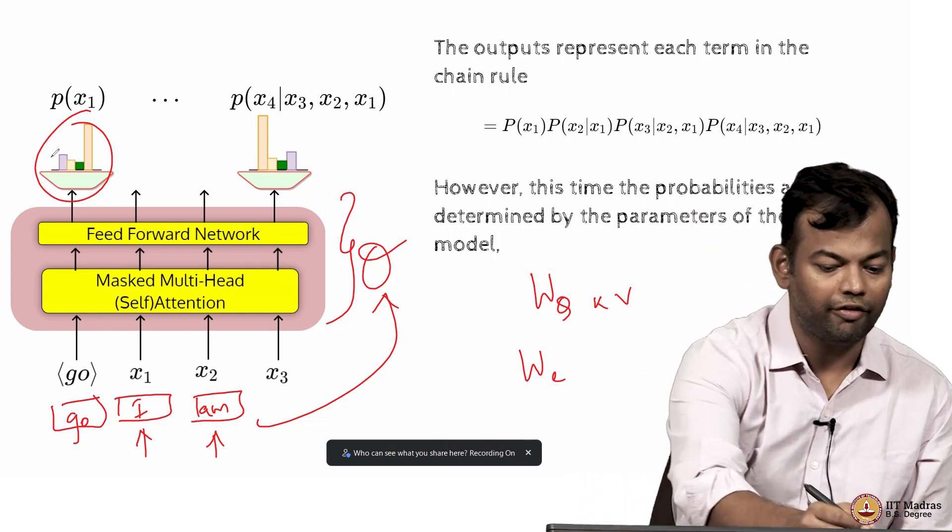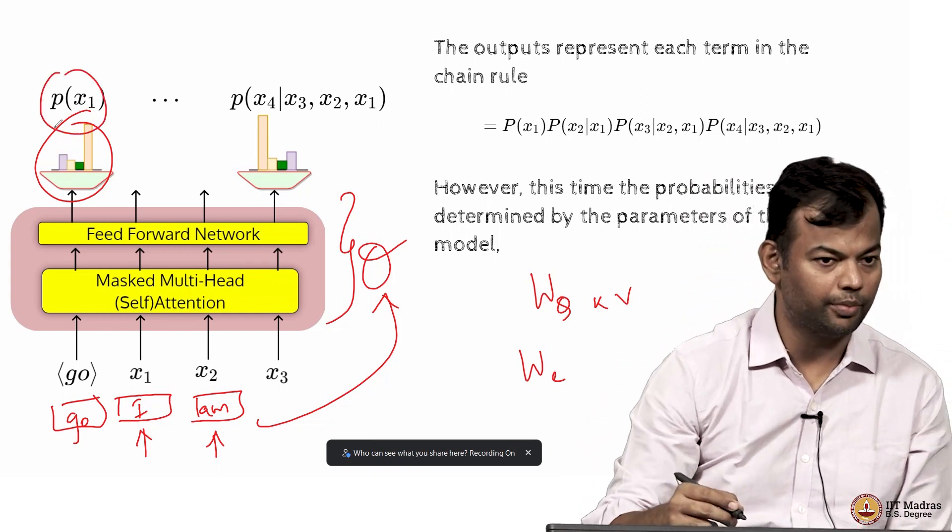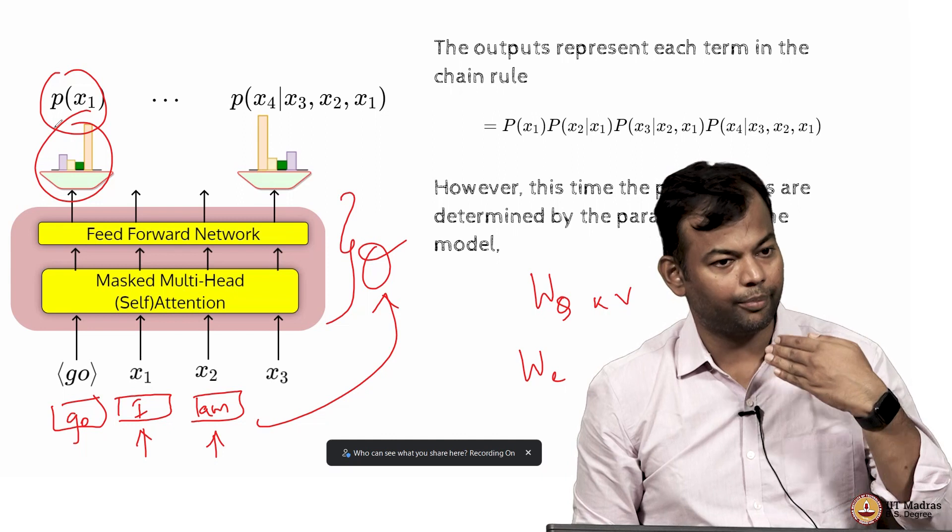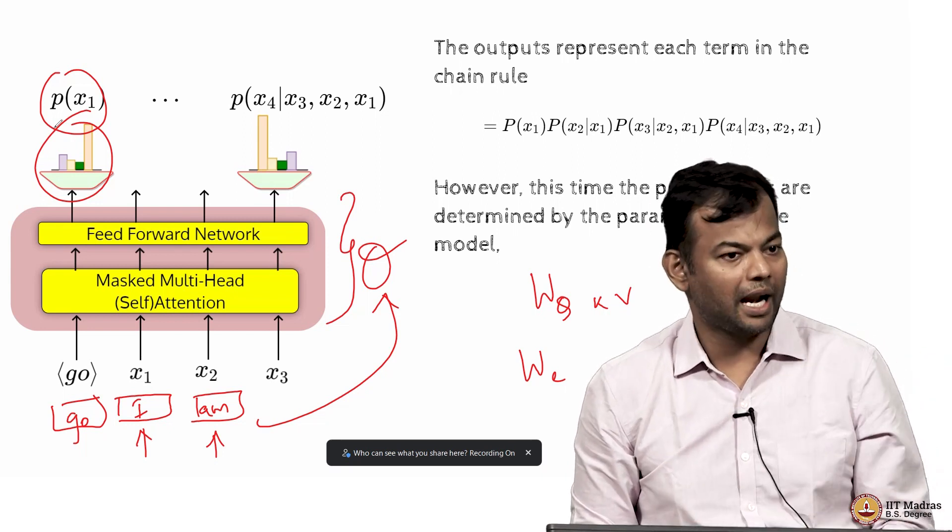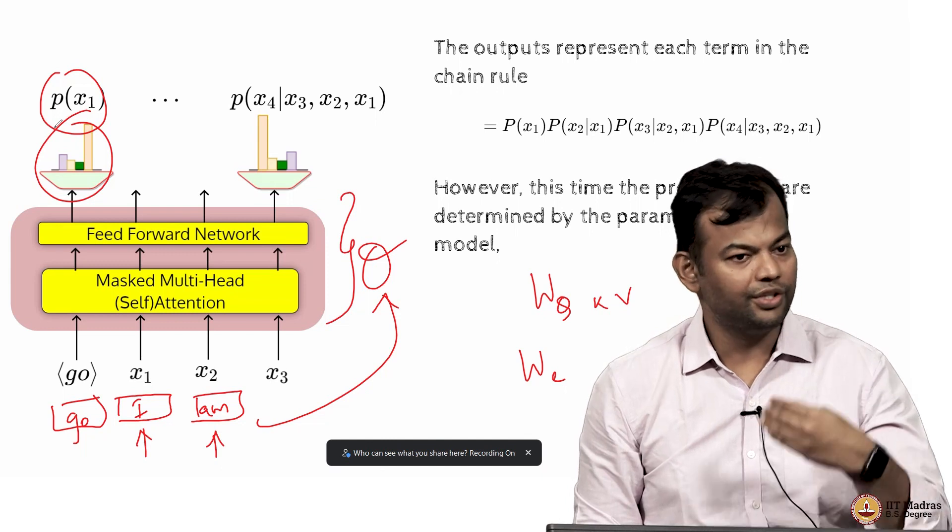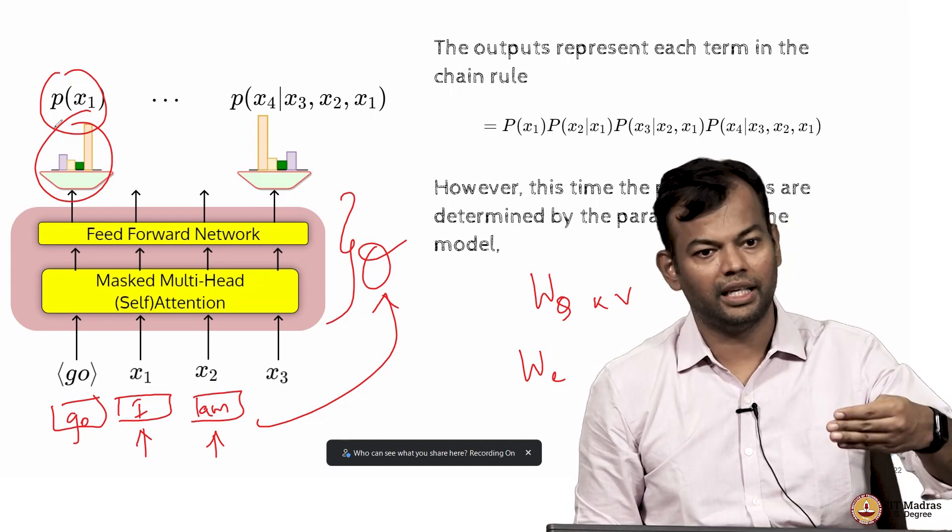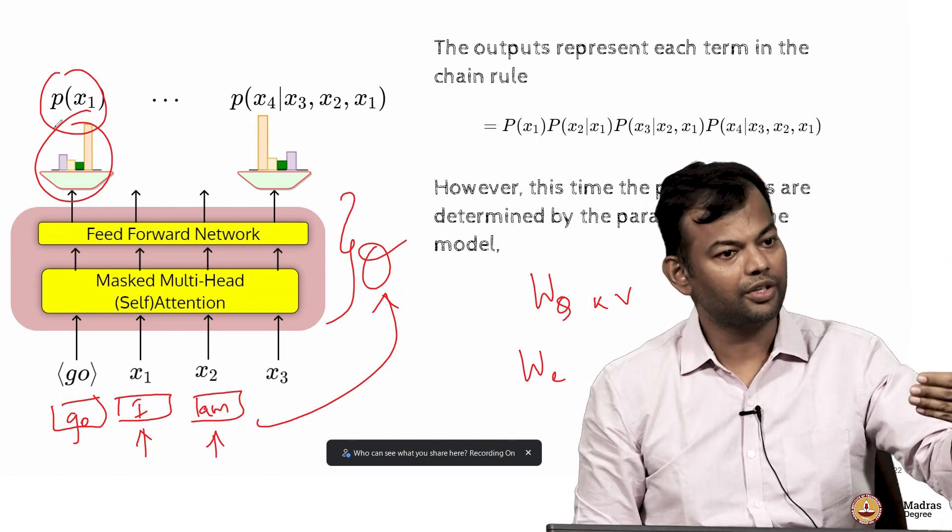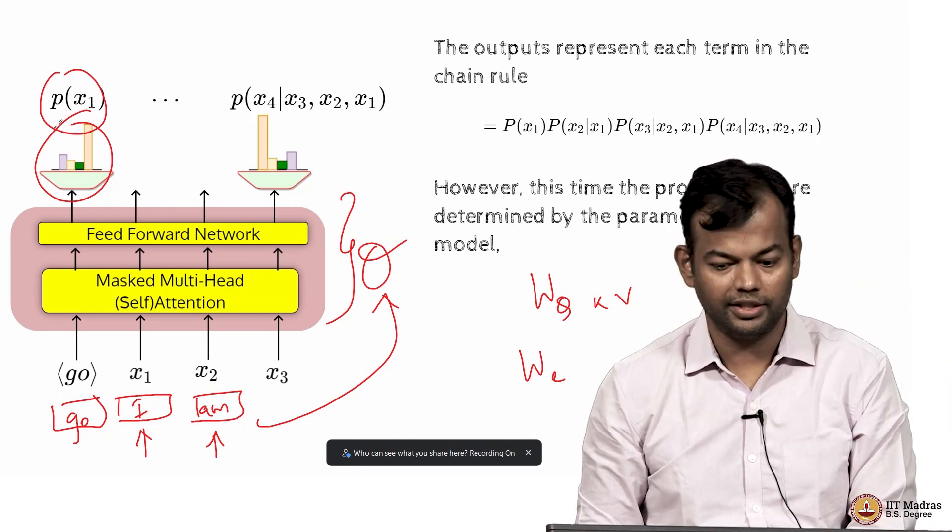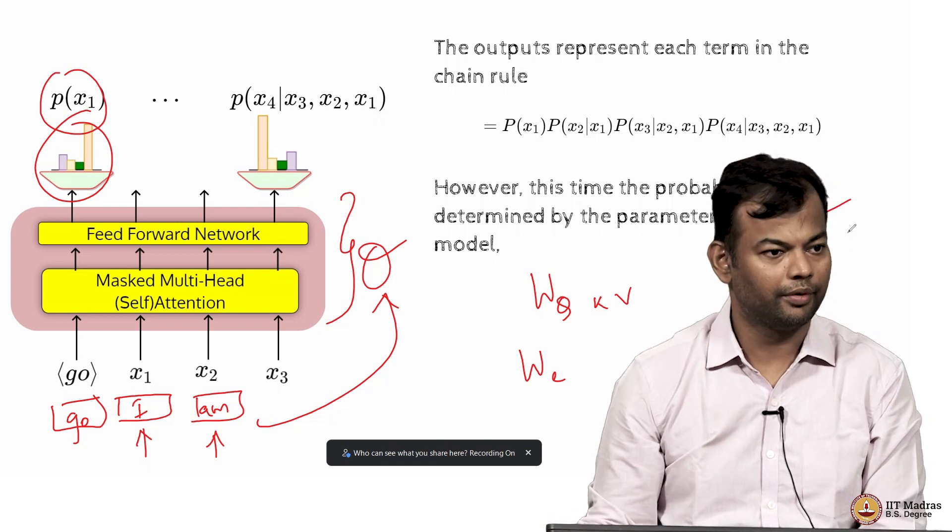Yes. And that softmax is actually giving me this probability distribution. So what it means is that, that probability distribution is being computed by the transformer using the parameters of the transformer. Once you have the parameters of the transformer, you give it any input, it will give you an output and in this case the output is from a softmax function, so you will get a probability distribution. Does this statement make sense now?